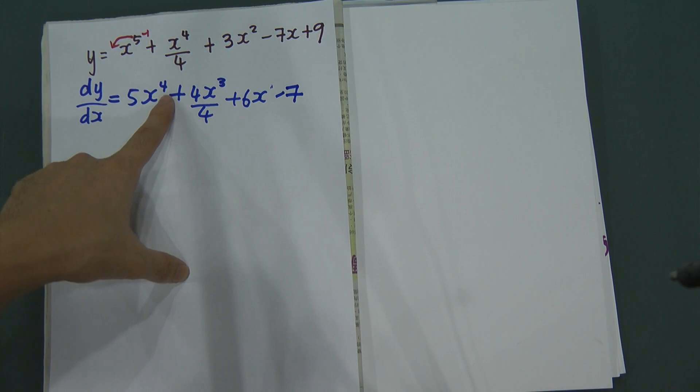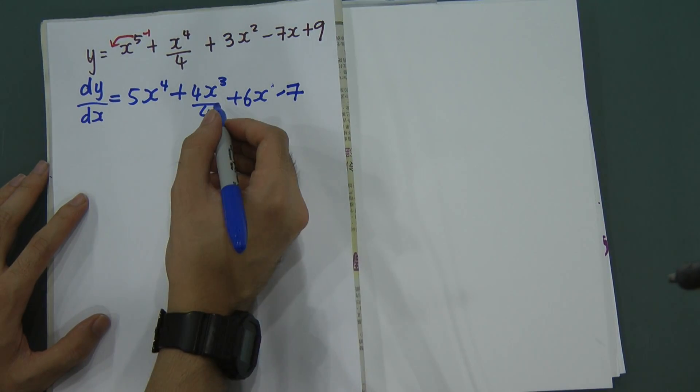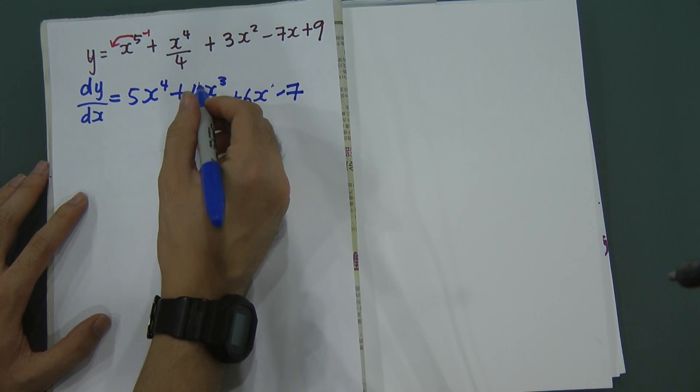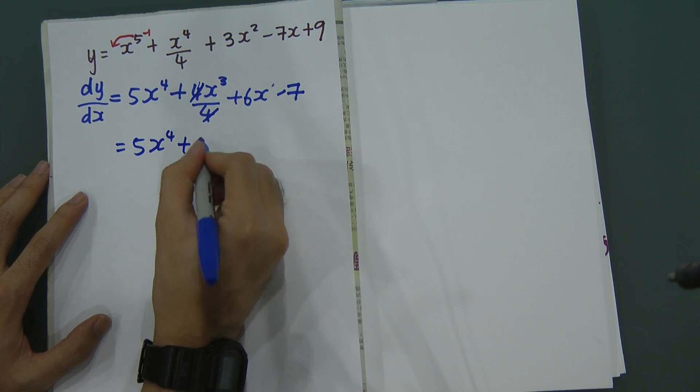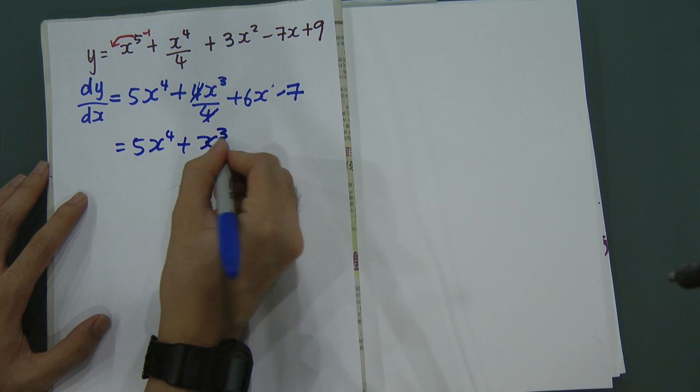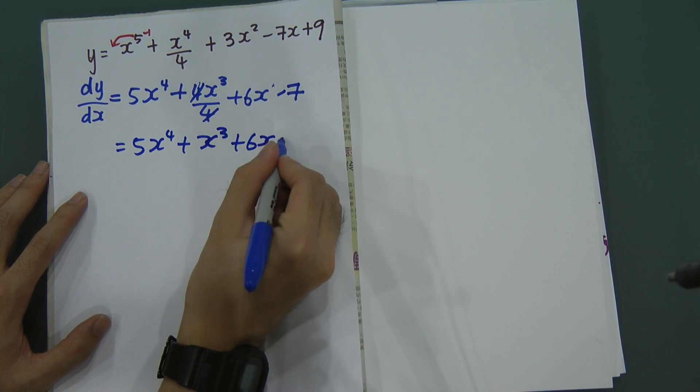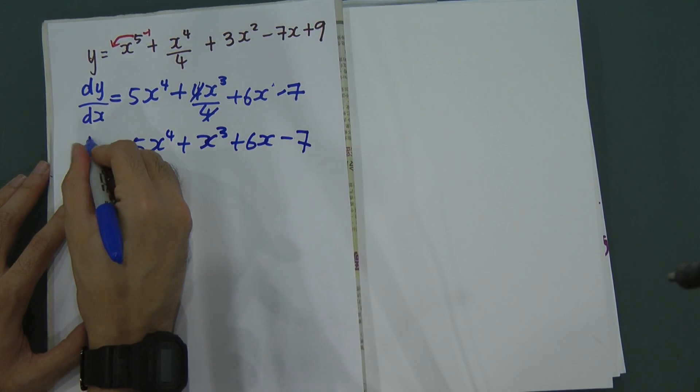5x power of 4. And then this one, we can simplify 4 and divide by 4. We simplify this one. We have got 5x power of 4 plus x power of 3 plus 6x minus 7. This one is dy dx.